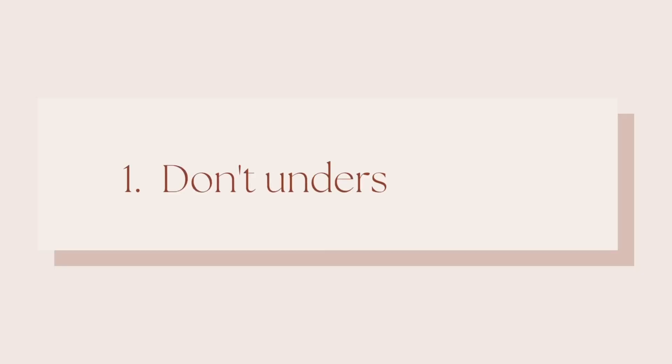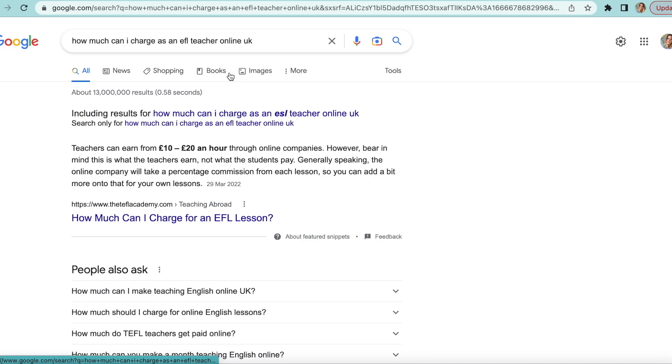Point number one is not to undersell yourself. You don't need me to tell you that you need to do your research — I know you're going to research the industry and check out what the going rate is for teachers — but bear in mind that prices advertised on places like Cambly are prices they take a cut from. They charge per minute, which is a terrible way to structure a business anyway, and any company that puts you on their platform and gives students access to a bank of teachers is going to take a cut in order to make their money.